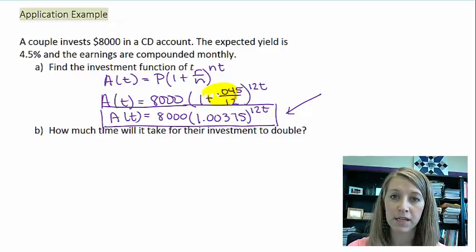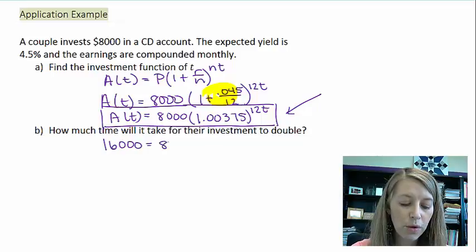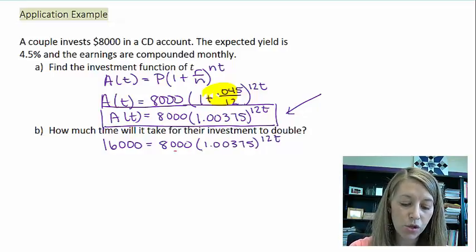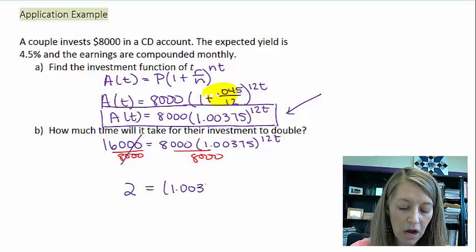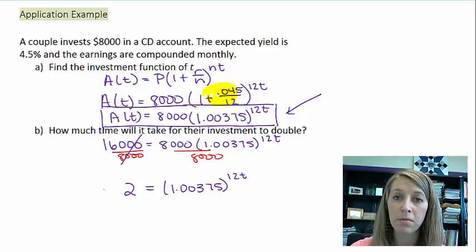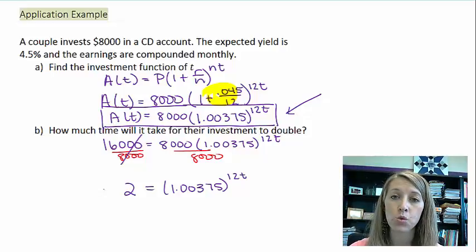How much time will it take for their investment to double? If we want to double $8,000, that's going to give us $16,000. So we set it equal to $16,000. If we solve this, the first thing we do is divide by the number out in front to simplify it, which gives us 2. That should be very obvious. If we want our amount to double, it's just going to equal 2, or 2 times the amount. That's something we're going to use to our advantage. Anytime we want our amount to double, we're basically going to throw away our actual values and just set our equation equal to 2.